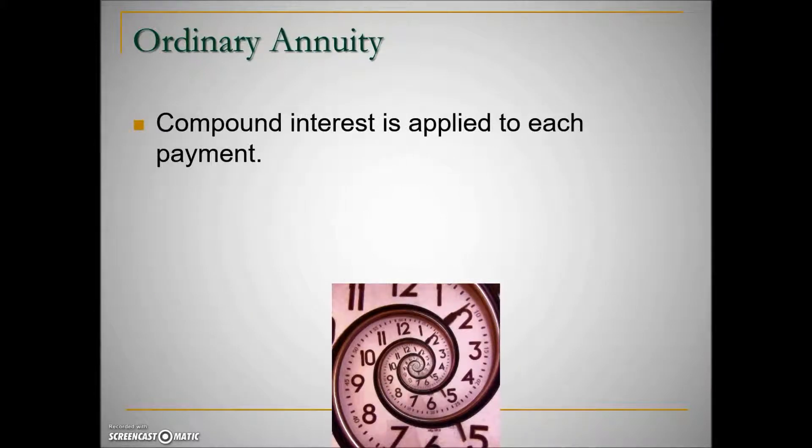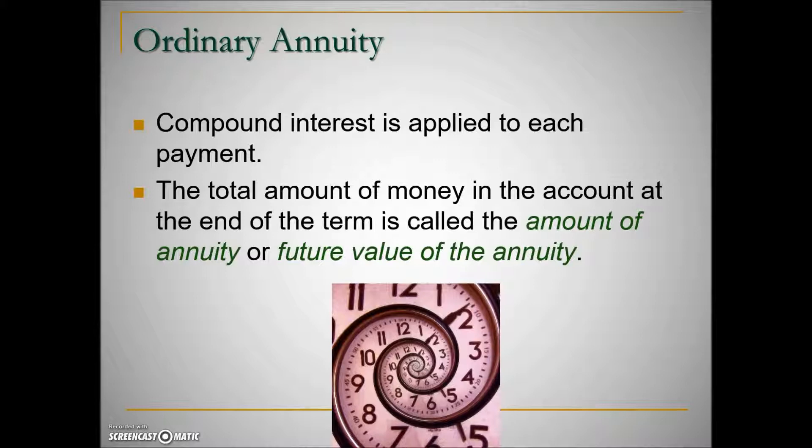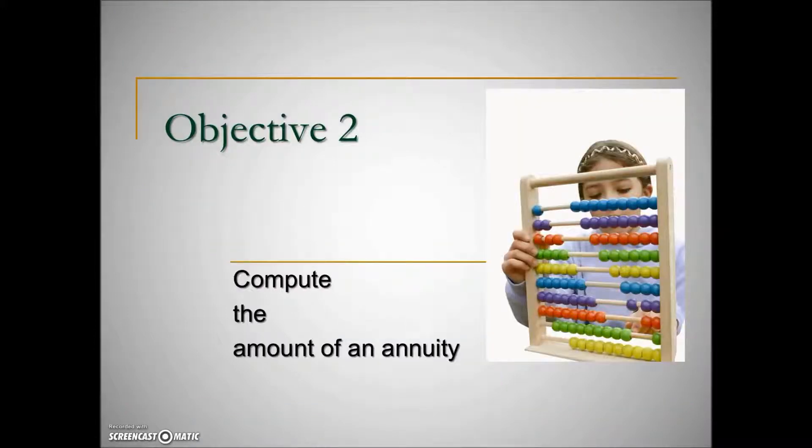When we have an annuity, we have compound interest being added, which means after each payment there is interest being calculated, it's being added on to the previous balance and is accumulating interest on interest. The total amount of money in the account at the end of the term is called the amount of the annuity or future value of the annuity, what it has grown into. Let's take a look at how we are going to calculate an annuity and exactly how it works.